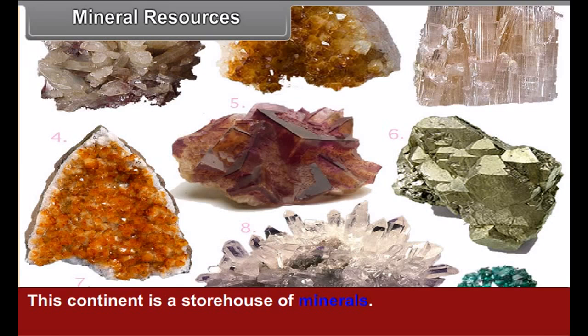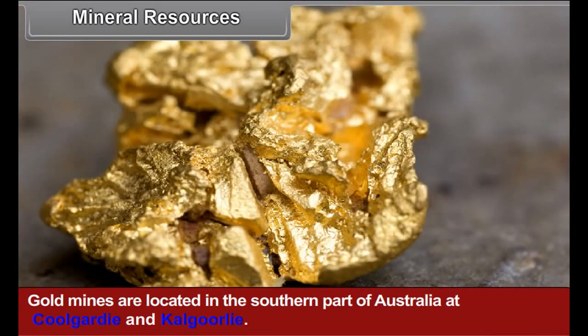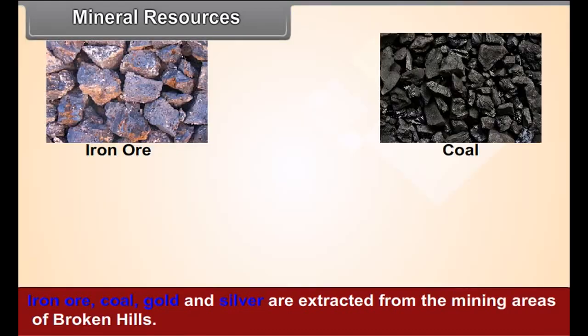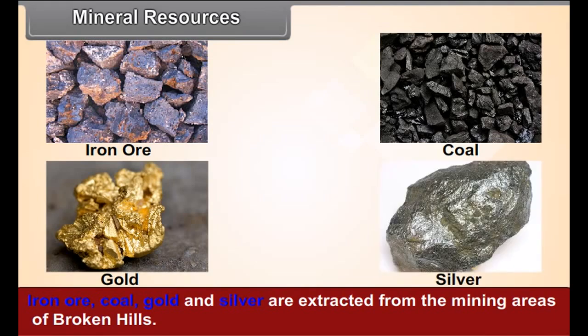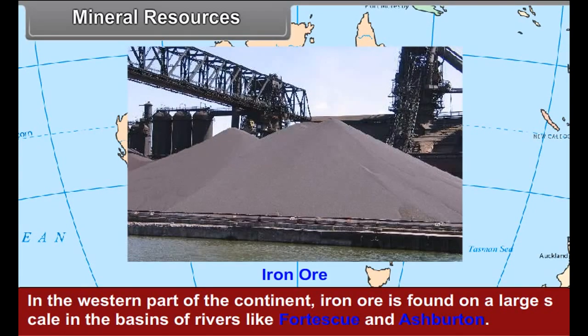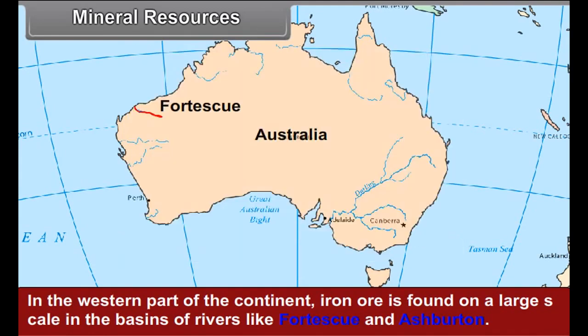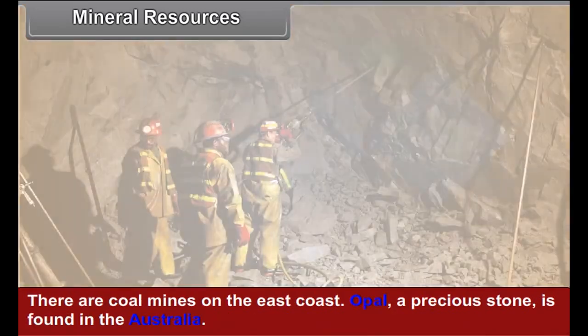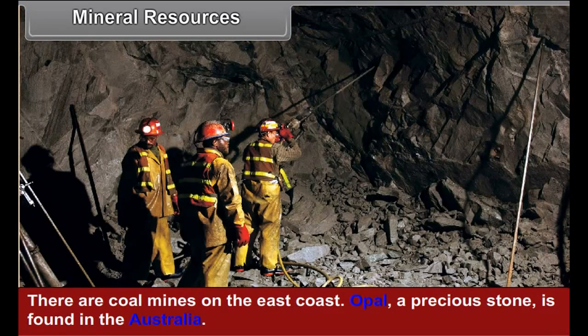Mineral resources: This continent is a storehouse of minerals. Gold mines are located in the southern parts of Australia at Coolgardie and Kalgoorlie. Iron ore, coal, gold, and silver are extracted from the mining areas of Broken Hill. In the western parts of the continent, iron ore is found on a large scale in the basins of rivers like Fortescue and Ashburton. There are coal mines on the east coast. Opal, a precious stone, is also found in Australia.